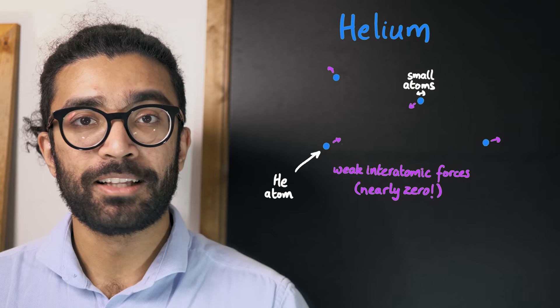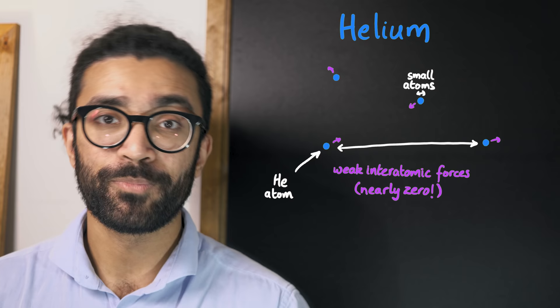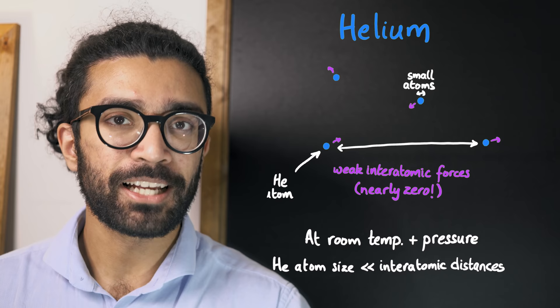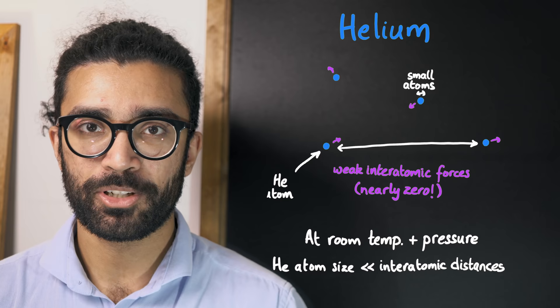And so our assumption that the average distance between particles is much, much bigger than the size of a particular particle is very reasonable without having to go to very low densities of helium gas. Even at room temperature and pressure, helium's density is generally low enough that we can treat this assumption as being highly accurate.